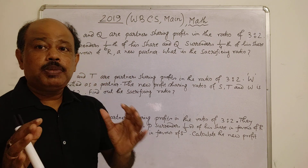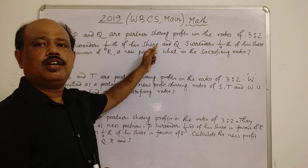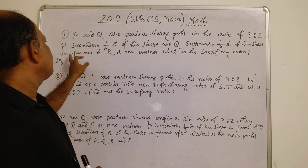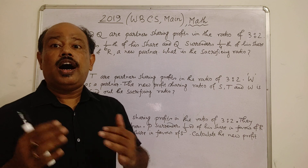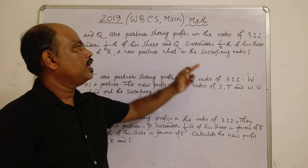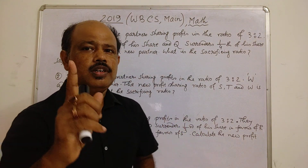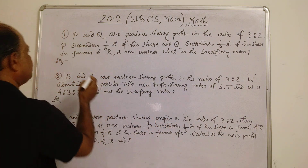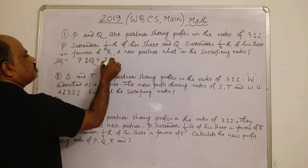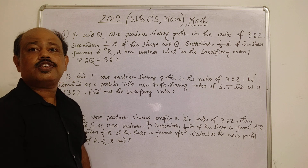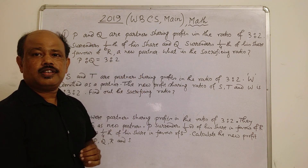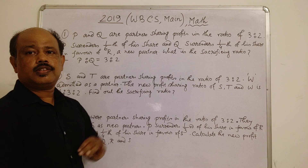To clarify: P surrenders 1/6th of his share — sorry, let me re-read. P surrenders 1/5th and Q surrenders 1/4th of their respective shares to a new partner. What is the sacrificing ratio? Very simple — solve it in one or two seconds. Look: P surrenders 1/6th and Q surrenders 1/4th.